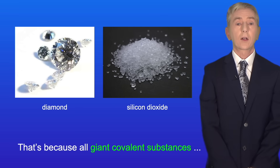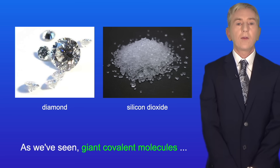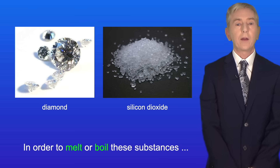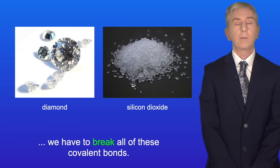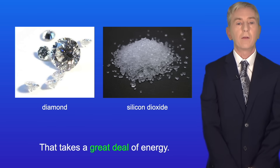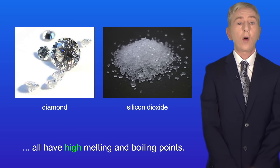All giant covalent substances have high melting and boiling points. Giant covalent molecules have millions of strong covalent bonds, and in order to melt or boil these substances we have to break all of these covalent bonds, which takes a great deal of energy. So giant covalent substances all have high melting and boiling points.